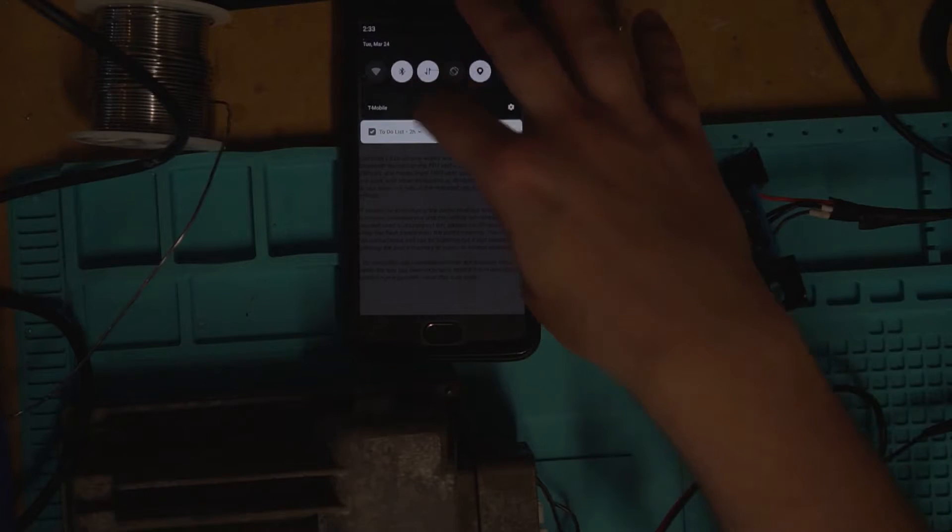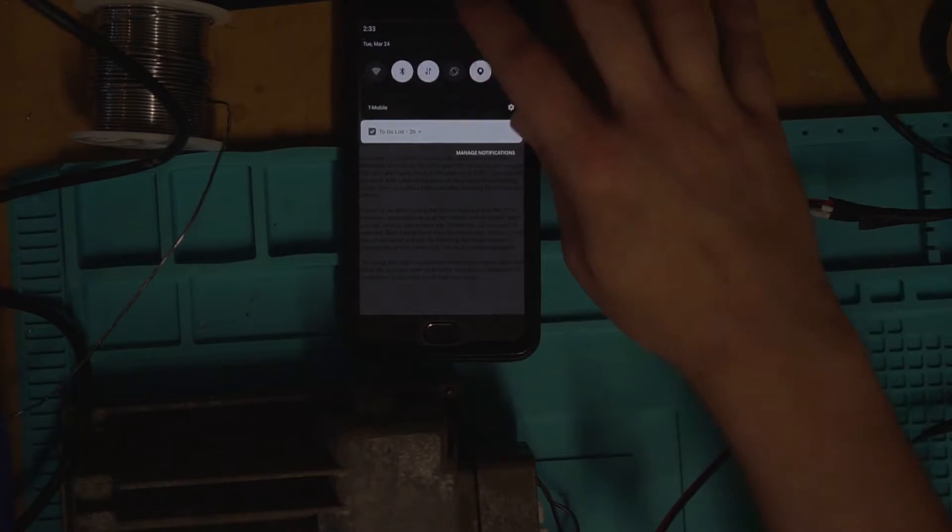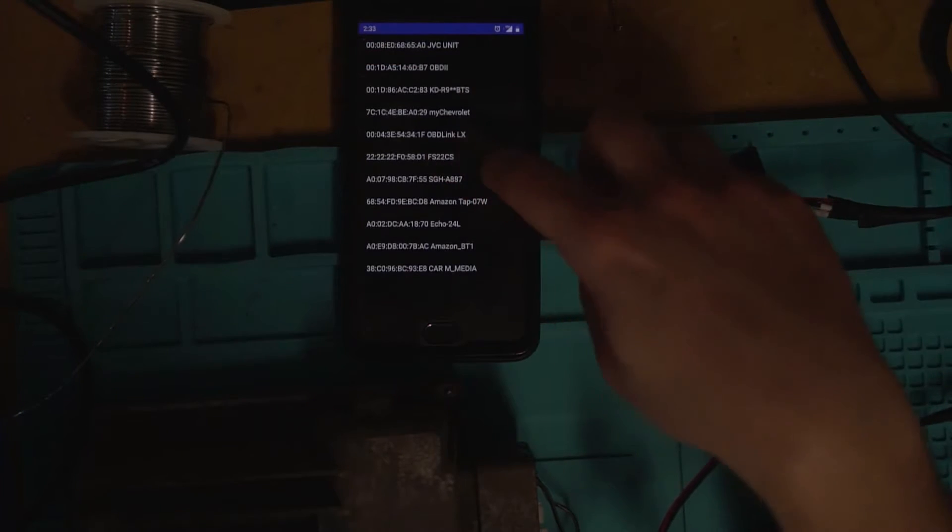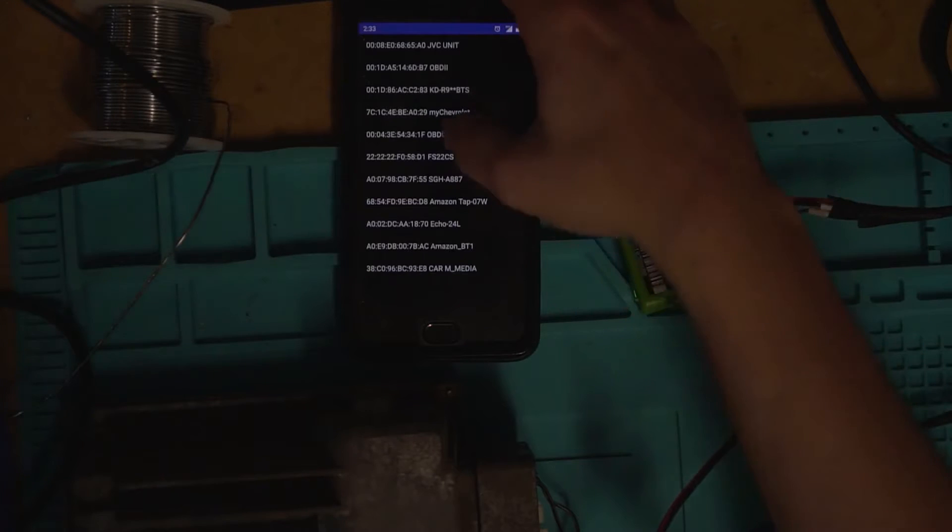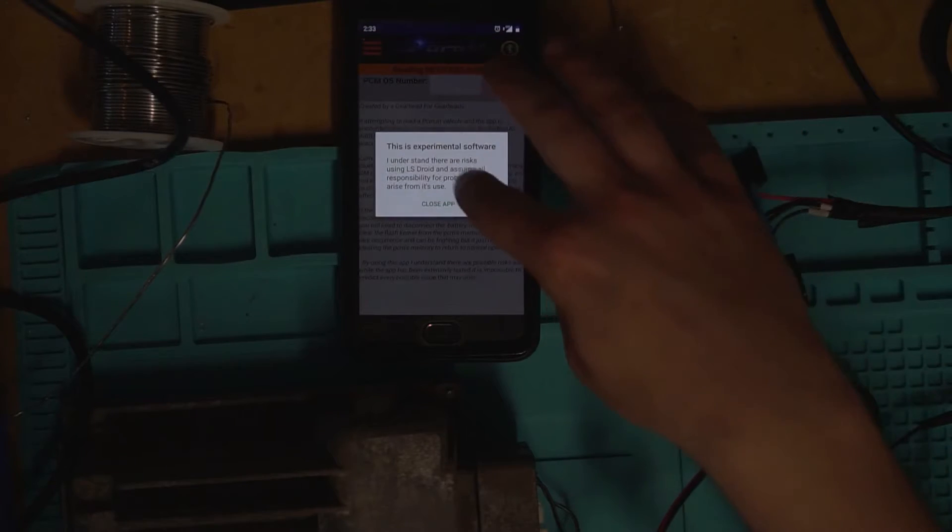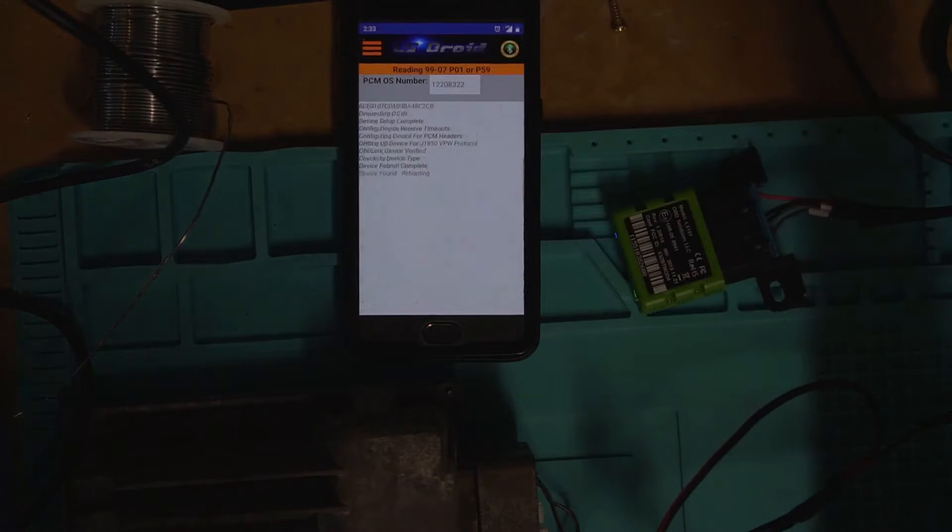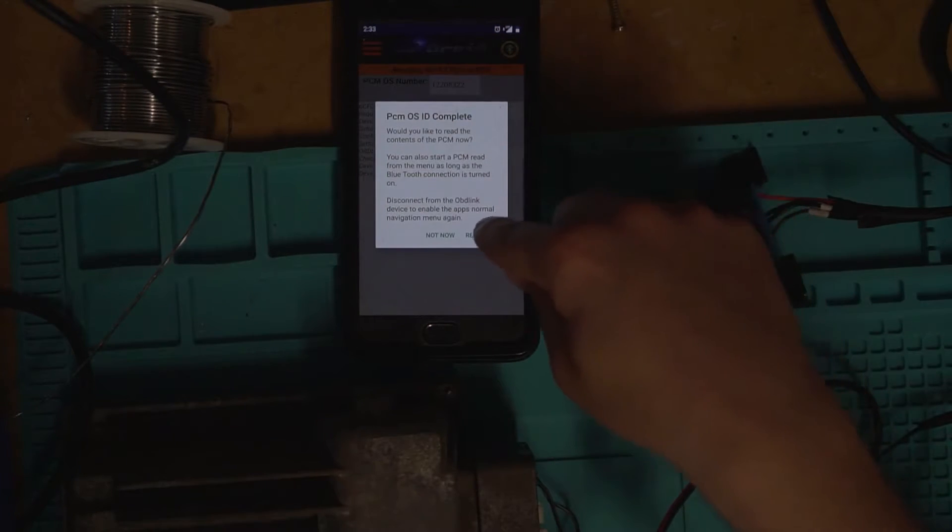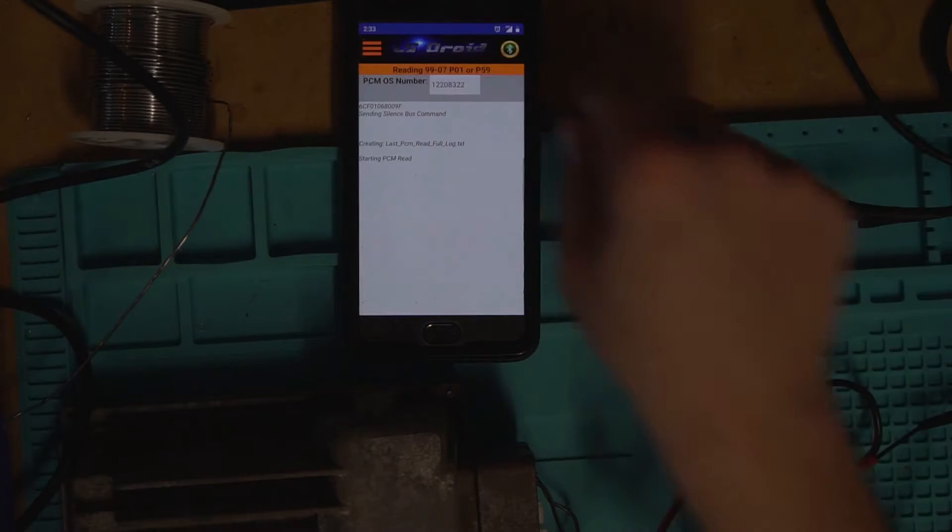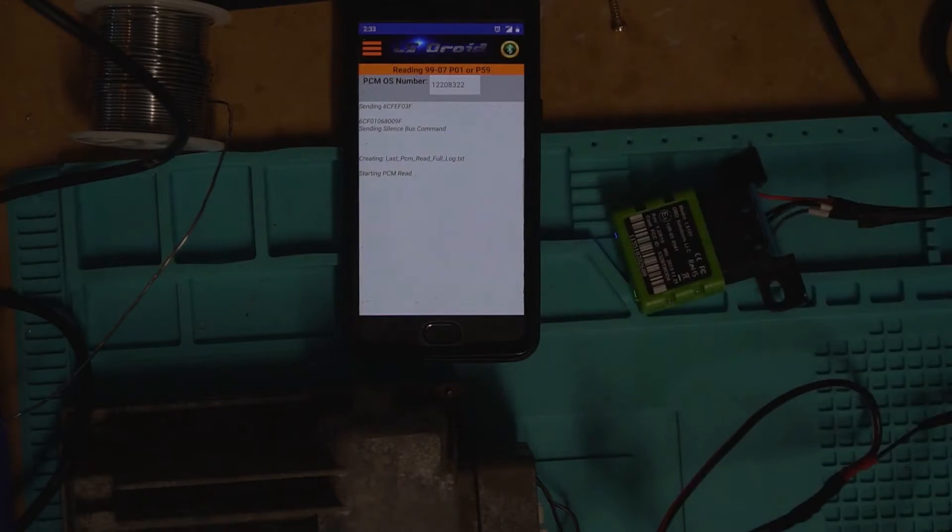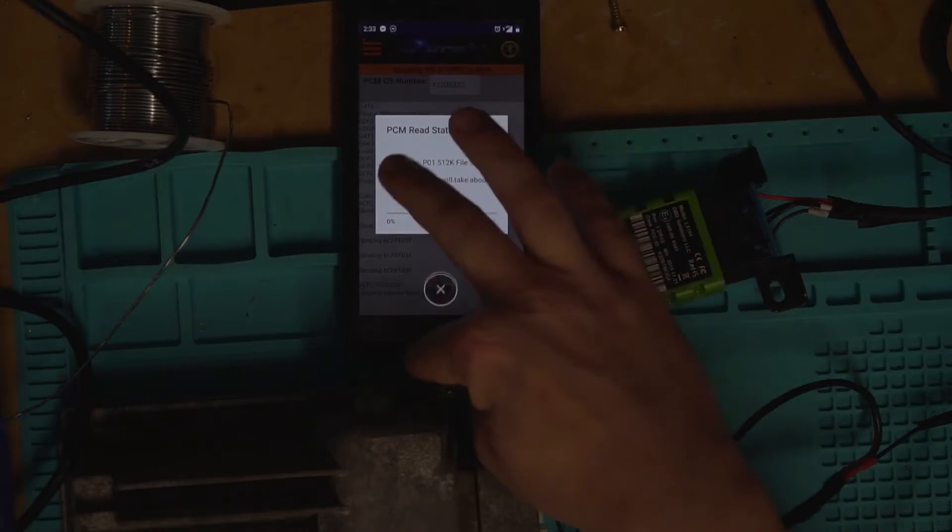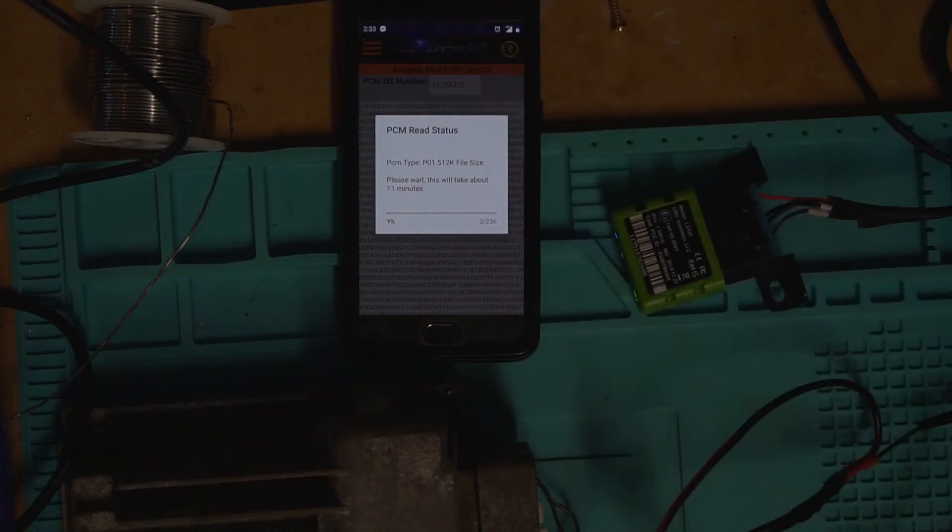All right, we don't need location on. Battery's getting low. So OBD link LX. And continue. And we want to read PCM. So there we go. We got our OS ID up here. And we're just going to start downloading it. So it's found the key. Getting messages about working on instrument clusters. And there we go. It's going to take it about 11 minutes to read this. And it takes about 22 minutes to read the 1 megabyte. So the P59s. So we'll let this run. And we'll come back to this and take a look at it.